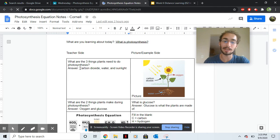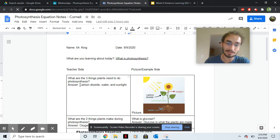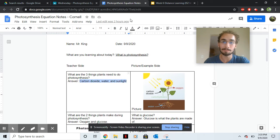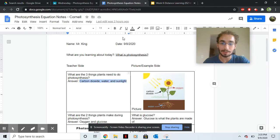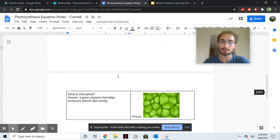So like in the bell work, it asked, what are the three things plants need to do photosynthesis? You give me the answer, and then I ask for a picture. And then the next one, it'll ask, what do plants make during photosynthesis? So you should be filling out the notes as we go.